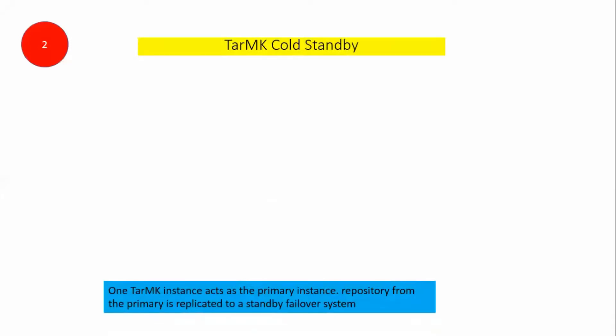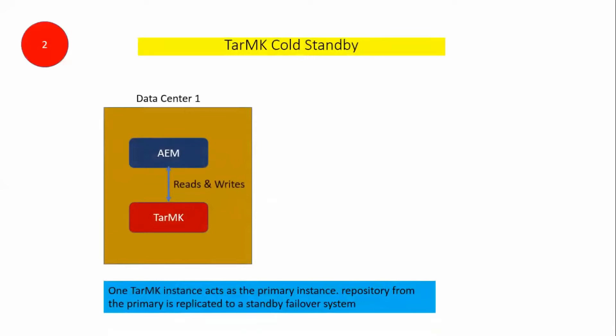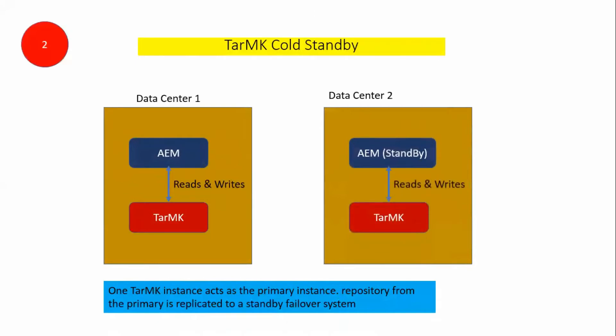The second option is TarMK cold standby. In this case, one TarMK instance acts as the primary instance. The repository from the primary is replicated to the standby failover system. In the pictorial representation, data center one has a single AEM instance with TarMK linked directly to read and write operations. Data center two has an AEM standby with a TarMK, and tar files from data center one are periodically pushed to data center two.